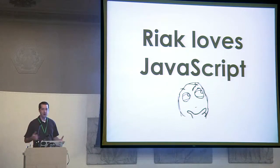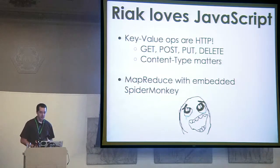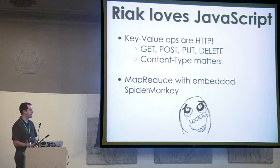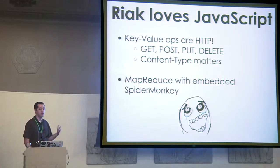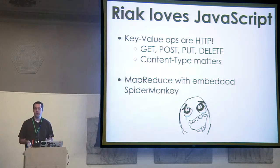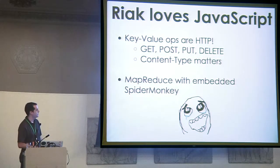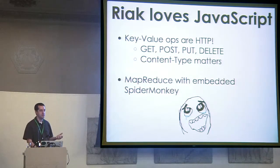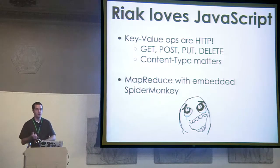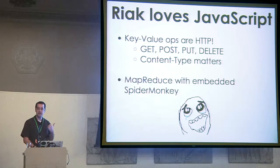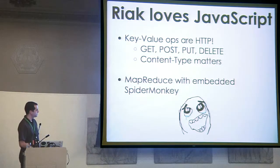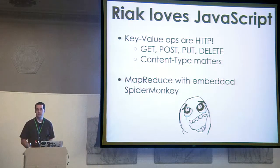Riak loves JavaScript — that's why we're here. Key-value operations are HTTP. So if you want to store your stuff in Riak, you use PUT or POST. You want to fetch something out of Riak, you use GET. You want to get rid of it, use DELETE. But the key thing, beyond just using those four HTTP verbs, is that the content type matters. You basically tell Riak what you're storing in it, and it'll very happily store whatever. Beyond just playing well with HTTP and web apps, you've got MapReduce. MapReduce is a big buzzword right now — CouchDB, Mongo, Hadoop, Riak all have MapReduce. We embed a SpiderMonkey engine. Each Riak node that you build into a cluster includes, by default, eight SpiderMonkey instances that you can run your JavaScript functions on.